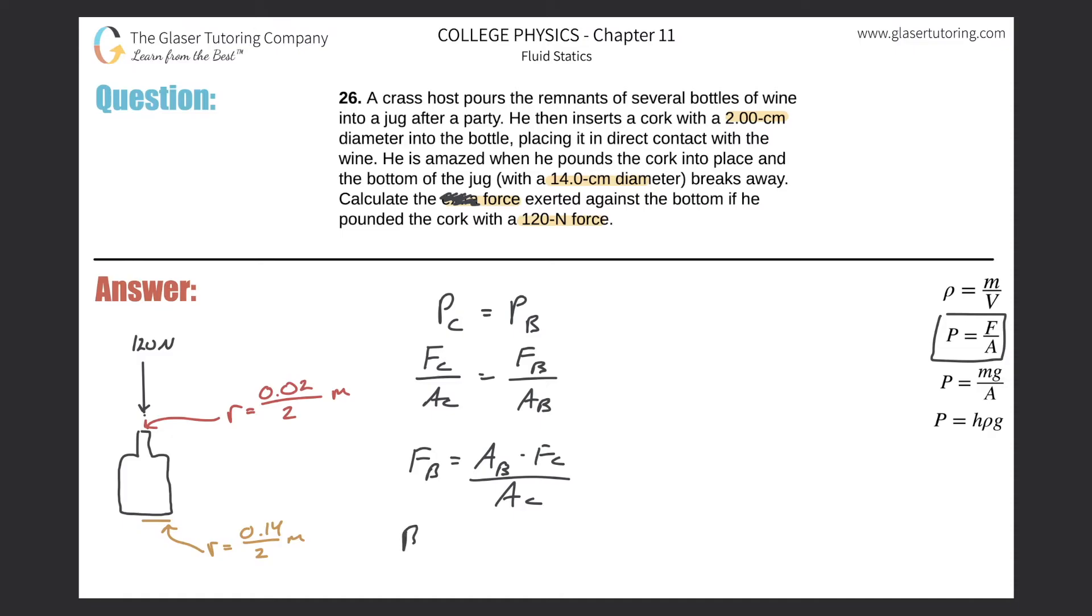The force at the bottom of the jug will equal π r squared at the bottom of the bottle times the force on the cork divided by π r squared, and the radius we're talking about is the cork here. Notice how the π is canceled, leaving us with F sub b equals r b squared times F c all over r c squared. Here is our formula.